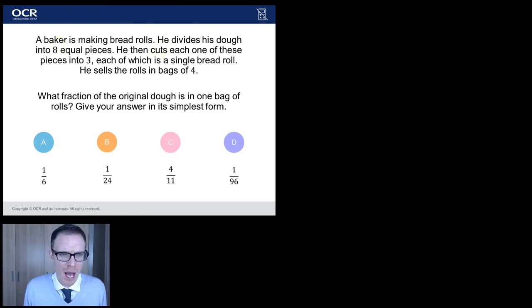Let's have a read of it. A baker is making bread rolls. He divides his dough into eight equal pieces. He then cuts each one of these pieces into three, each of which gives him a single bread roll. He then sells the rolls in bags of four.